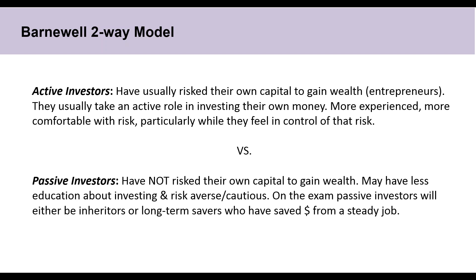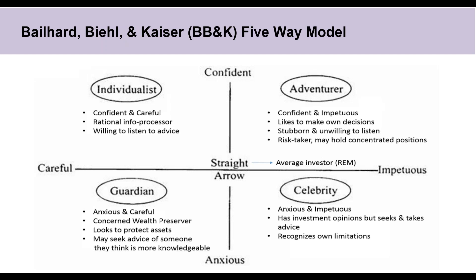The BBK five-way model builds on the Barnwell classification scheme but introduces two axes. On the y-axis you have how confident an investor is; on the x-axis, how carefully they consider decisions and act on them. There are really five investor types depending on how careful or impetuous they are and how confident or anxious they are. The straight arrow is a blend of each and is the closest to behaving like a rational economic actor.